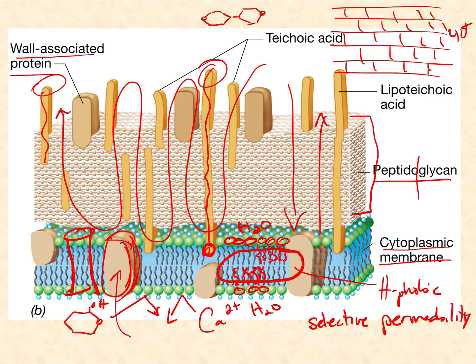That's the basic structure of the envelope of a gram-positive bacterium like Listeria monocytogenes. Learn this really well — you should be able to recognize it and reproduce it, along with all five key structures: the cytoplasmic membrane, the peptidoglycan, and the three molecules found inside the peptidoglycan — lipoteichoic acids, teichoic acids, and wall-associated proteins. Also make sure you're comfortable, at least at a basic level, with the functions of these.